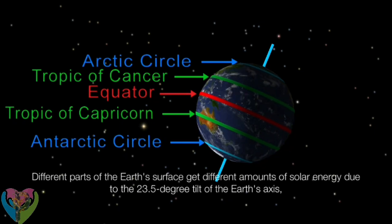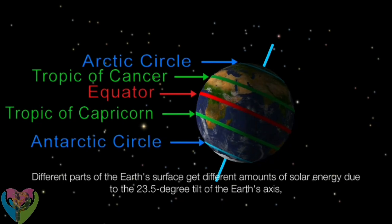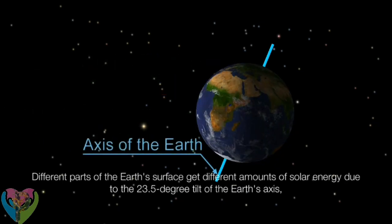Different parts of the Earth's surface get different amounts of solar energy due to the 23.5 degree tilt of the Earth's axis.